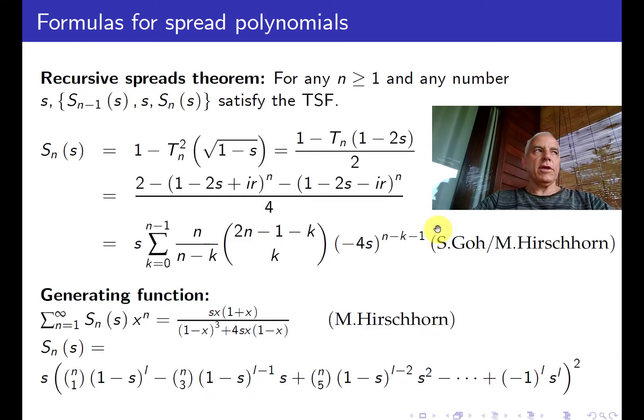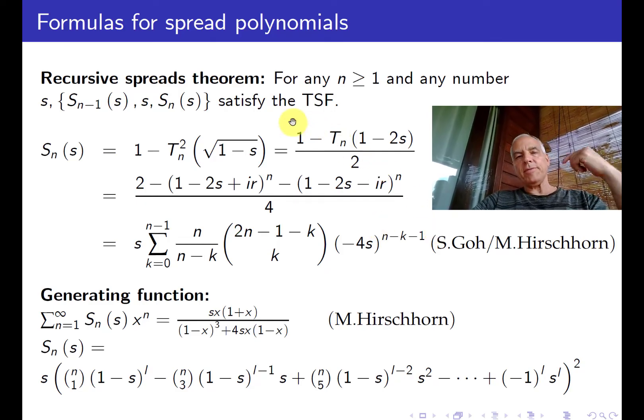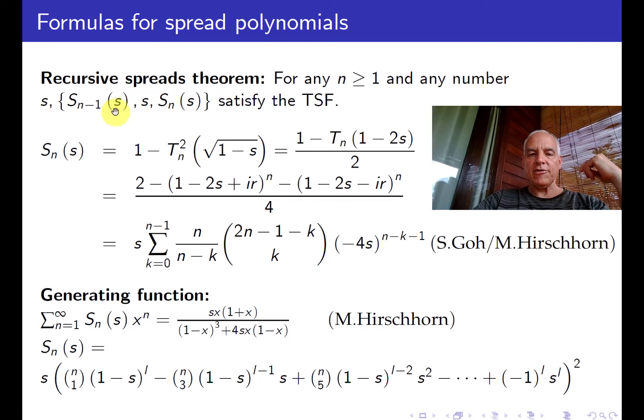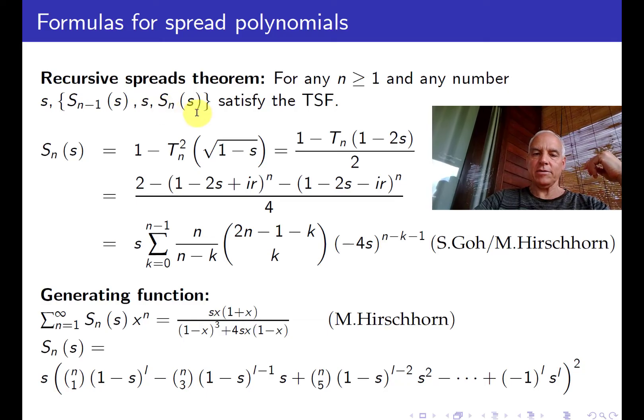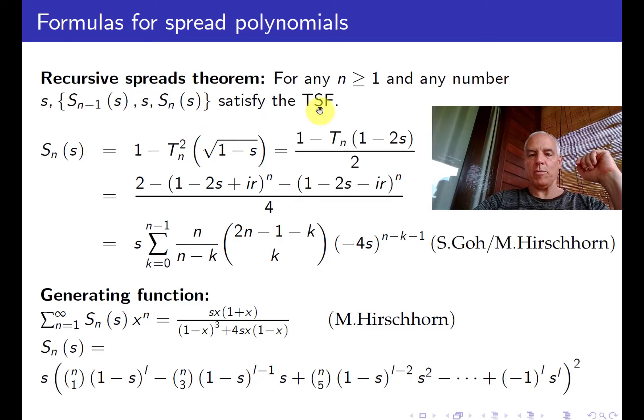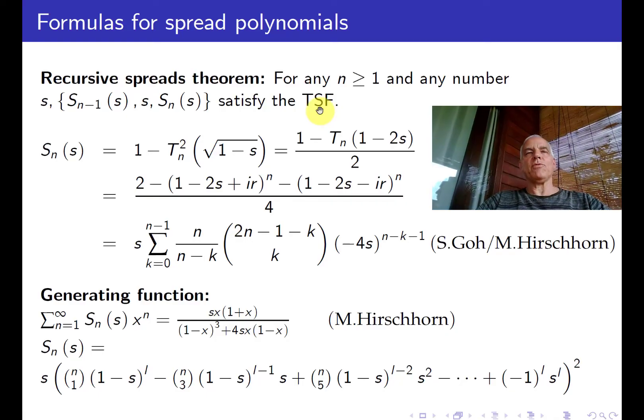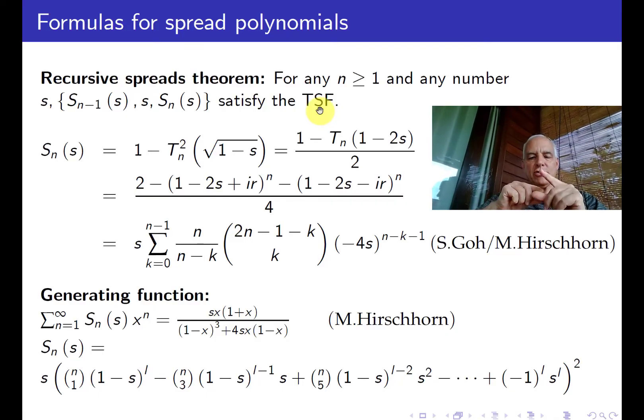Now the connection with the triple spread formula is the following. This recursive definition of the spread polynomials has the property that if you take Sₙ₋₁(S), S, and Sₙ(S), those three numbers for any S satisfy the triple spread formula. This is an algebraic reflection of the fact that what this thing is measuring is, imagine you have two lines making a spread of S and then imagine reflecting this first line in the second line.